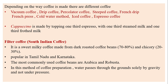Different types of coffee include vacuum coffee, drip coffee, percolator coffee, steamed coffee, French drip, French press, cold water method, iced coffee, espresso, and cappuccino — made by topping one-third espresso with one-third steamed milk and one-third frothed milk. Filter coffee or South Indian coffee is a sweet milky coffee made from dark roasted coffee beans (70–80%) and chicory (20–30%), very popular in Tamil Nadu and Karnataka, using Arabica and Robusta beans. Water passes through the grounds solely by gravity.